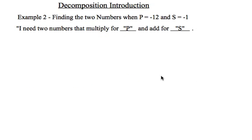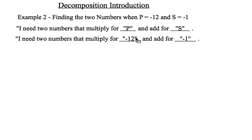Let's try it again with another two numbers. We'll look at negative 12 as the product, and the sum is negative 1, so I need my little sentence here. I need two numbers that multiply for negative 12 and add for negative 1. So if you'd like to take a minute and think about that.